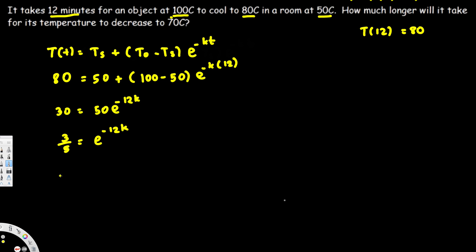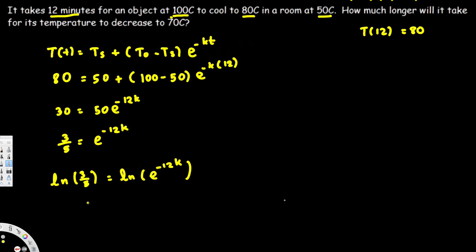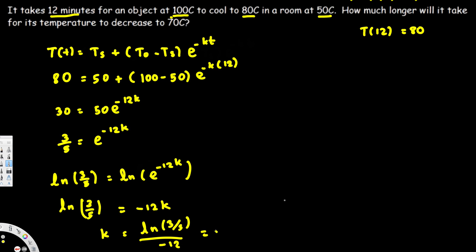To get rid of the e, we take the natural log of both sides. ln(3/5) = ln(e^(-12k)). Since ln and e cancel, this becomes ln(3/5) = -12k. Therefore, k = ln(3/5) / (-12), and if you calculate this value you get k ≈ 0.04257.